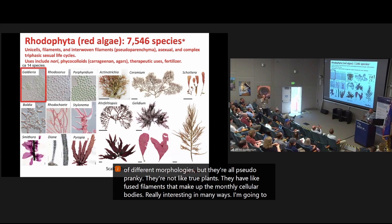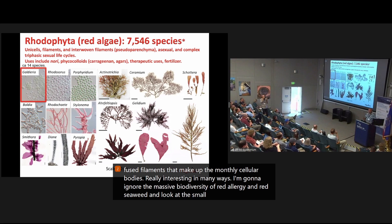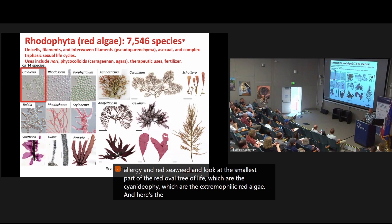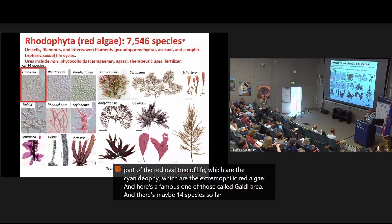Lots of different morphologies, but they're all pseudoparenchyma. They're not like true plants. They have fused filaments that make up the multicellular bodies. Really interesting in many ways. I'm going to ignore the massive biodiversity of red algae and red seaweeds and look at the smallest part of the red algal tree of life, which are the cyanidioficea, which are the extremophilic red algae. And here's a famous one of those called Galdieria, and there's maybe 14 species so far in this group, but this is an ancient lineage in the red algal and the eukaryote tree of life.